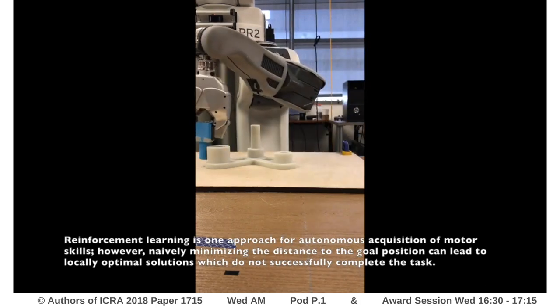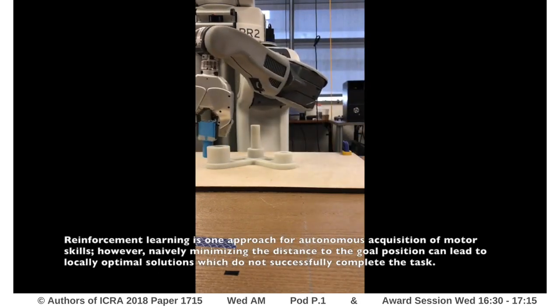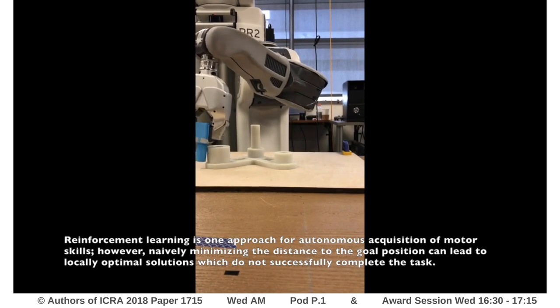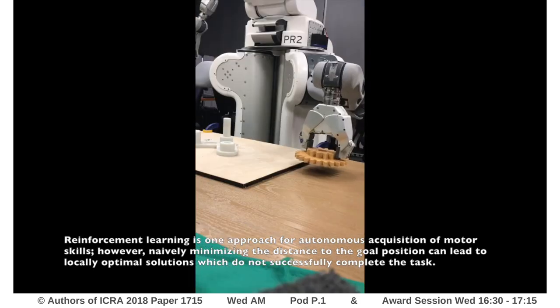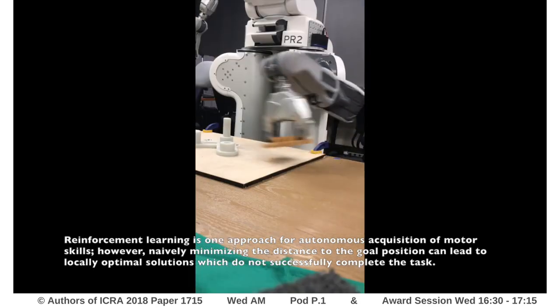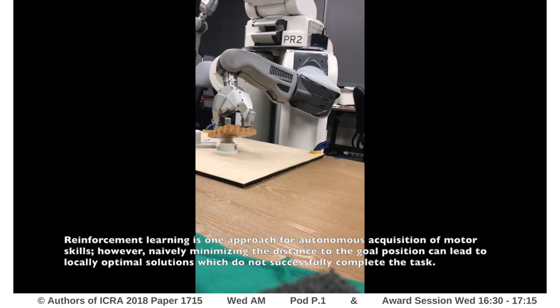Reinforcement learning is one approach for the autonomous acquisition of motor skills. However, naively minimizing the distance to the goal position can lead to locally optimal solutions which do not successfully complete the task.